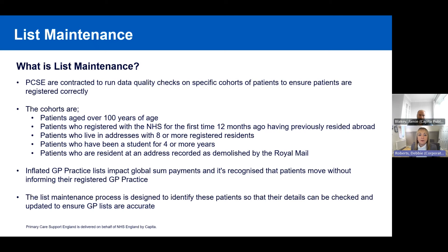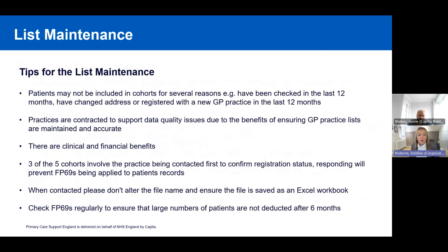For list maintenance, three of the five cohorts have an initial step of contacting the GP practice first. We ask that practices respond to those lists as soon as possible, with each patient on the spreadsheet given a code. This reduces the potential impact of patients being sent letters they don't respond to, which would otherwise result in FP69 flags and patients potentially being unknowingly removed from the GP practice some months later.